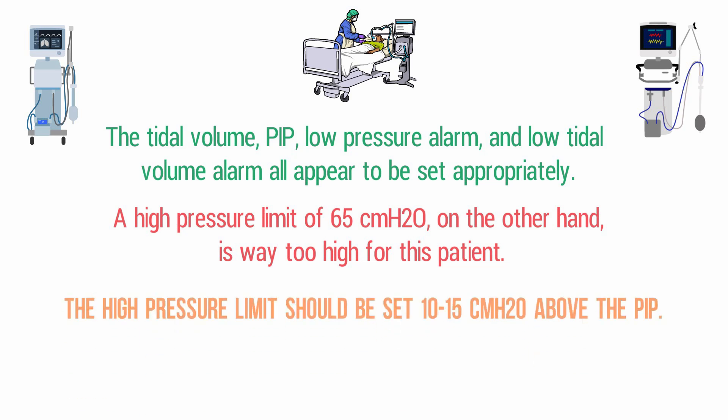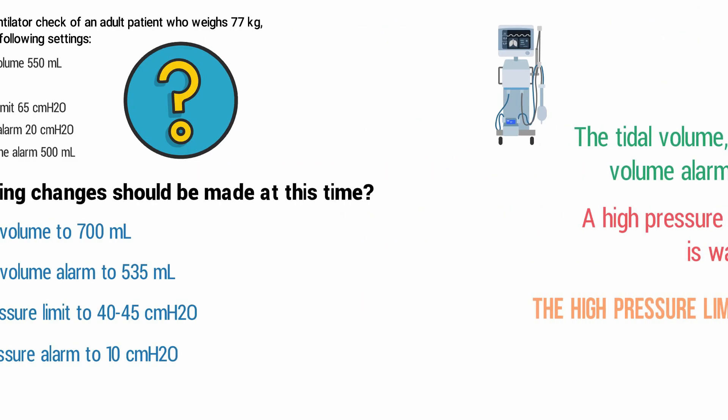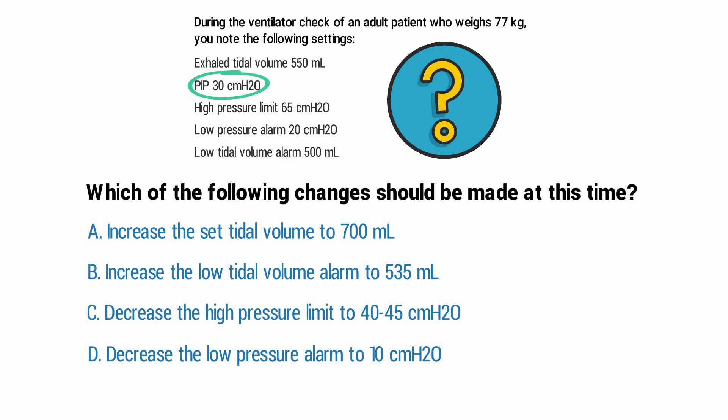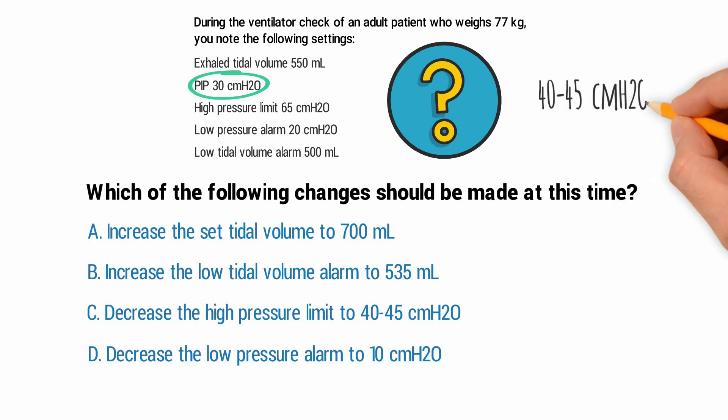As a general rule of thumb, the high pressure limit should be set 10 to 15 centimeters of water pressure above the peak inspiratory pressure. Otherwise, the patient has an increased risk of barotrauma or lung injury if too much pressure is applied to the lungs. For this patient, their peak inspiratory pressure is 30, which means the high pressure limit should be set between 40 to 45 centimeters of water pressure. So the correct answer is C: decrease the high pressure limit to 40 to 45 centimeters of water pressure.